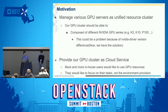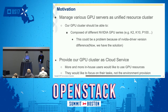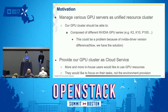Our motivation: we had some GPU servers but managed them individually, which wasn't efficient. We'd like to manage them as a unified resource cluster. Our GPU cluster should be able to include different NVIDIA GPU series, which could be a problem due to NVIDIA driver version differences. More and more in-house users want to use GPU resources for machine learning and big data analysis. They want to focus on their own tasks, so provisioning GPU resources should be as easy as possible. Therefore, we need to provide our GPU cluster as a cloud service — for example, on-demand service sharing GPU resources efficiently.